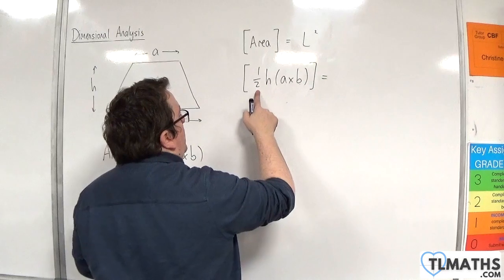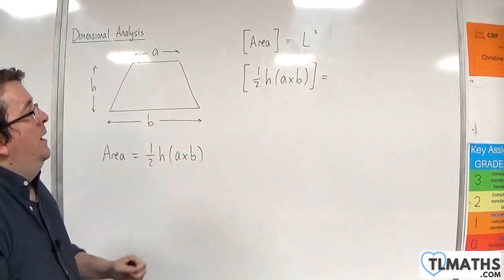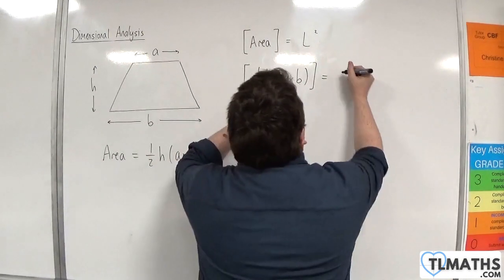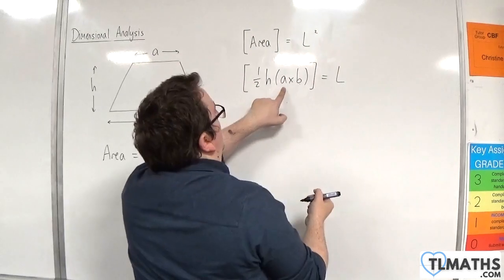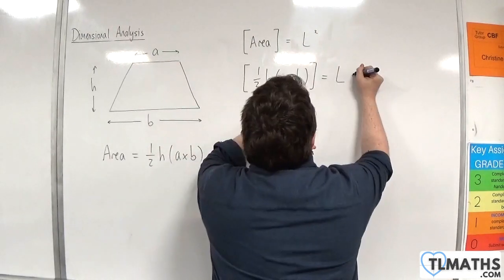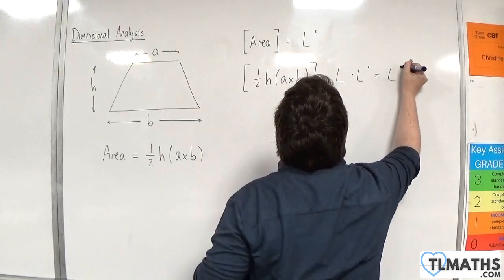The one-half is dimensionless, and then you've got h, which is a length, times by a length, times by a length. And so that's L cubed.